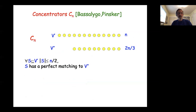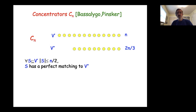This construction is called a concentrator — introduced by Bassalygo and Pinsker in the 1970s. What we get from expanders are these concentrators: N vertices on top, two-thirds N on the bottom, and every set of size N/2 at the top has a perfect matching to the bottom. It's a non-trivial notion — if you try to build something like this without knowing about expanders, you'd be lost. A random one will work, but it's quite magical.